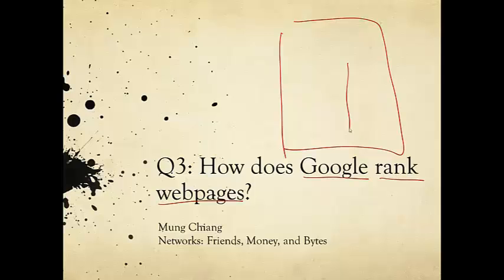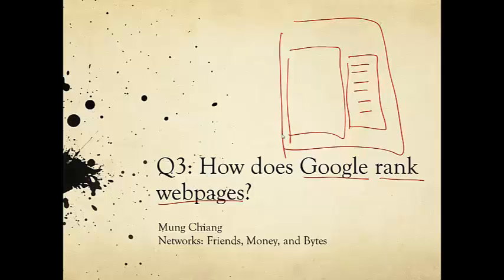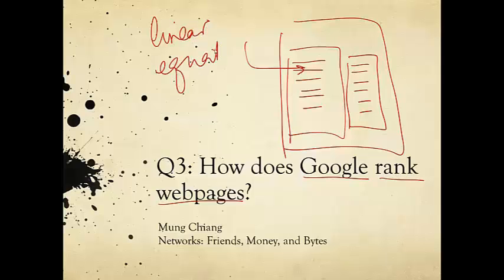In the last lecture, we talked about how Google auctions the advertising slots, usually on the right panel of the search results. And today, we'll talk about how Google ranks the web pages displayed in the main panel of the search result page. We will see that the algorithm Google uses to rank these web pages can be viewed as the solution to a gigantic system of linear equations. So while in this lecture we'll start using some linear algebra and matrix notation to accelerate the presentation, you should know that at the heart of all these notation, it is just solving linear equations.